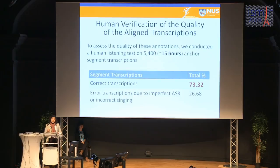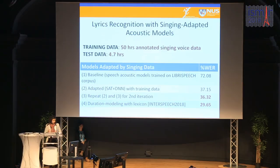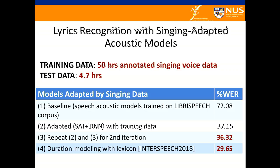We present a strategy to automatically build a lyrics-aligned singing voice dataset. We divide audio into 10-second segments, pass them through an ASR to get a decoded string of words, then use published lyrics as an external resource to correct errors via string alignment, resulting in cleaner aligned lyrics annotations. A human listening test showed 73% of audio segments were correctly aligned. We then used 50 hours of this annotated dataset to adapt a state-of-the-art ASR system to singing voice. Starting from a word error rate of 72%, speaker adaptive training reduced it to 37%, a second iteration to 36%, and adding duration modeling reduced it to 29%.